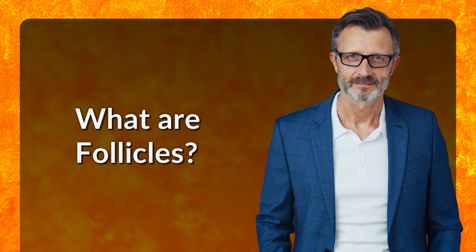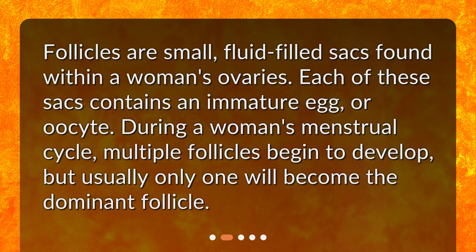What are follicles? Follicles are small, fluid-filled sacs found within a woman's ovaries. Each of these sacs contains an immature egg, or oocyte. During a woman's menstrual cycle, multiple follicles begin to develop, but usually only one will become the dominant follicle.